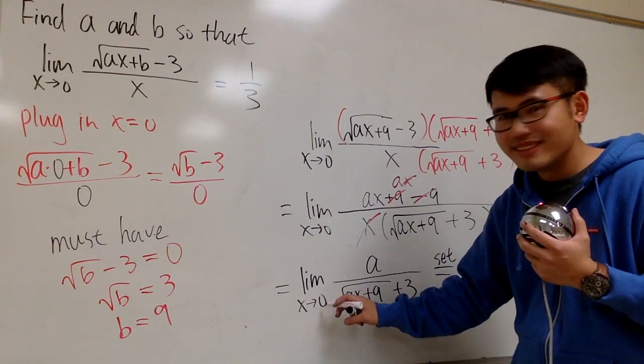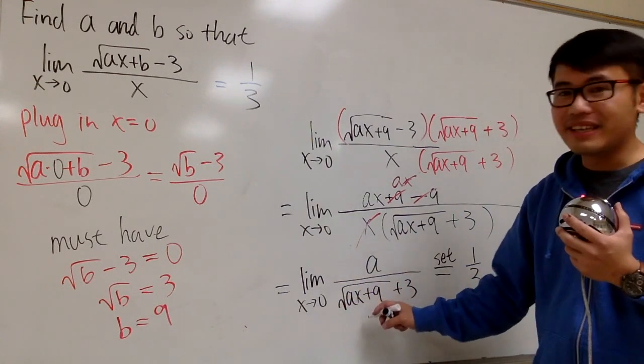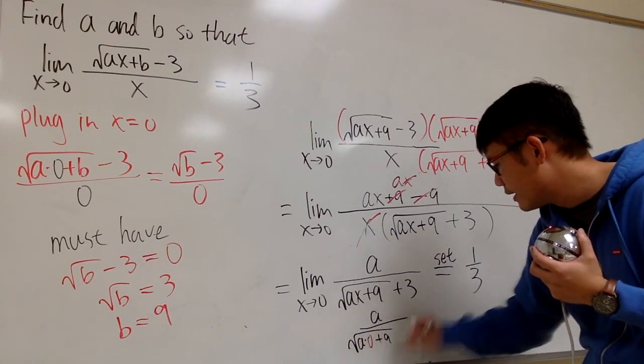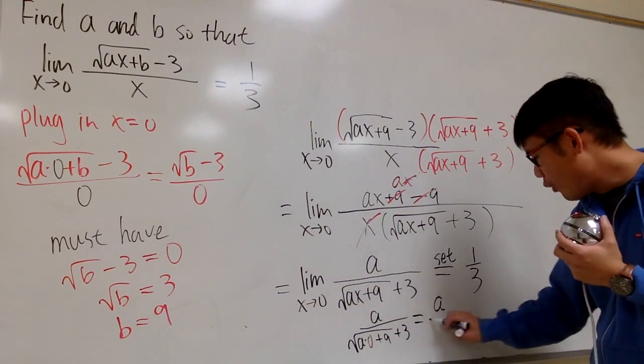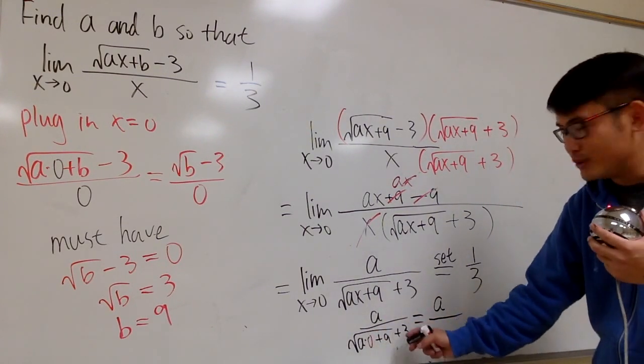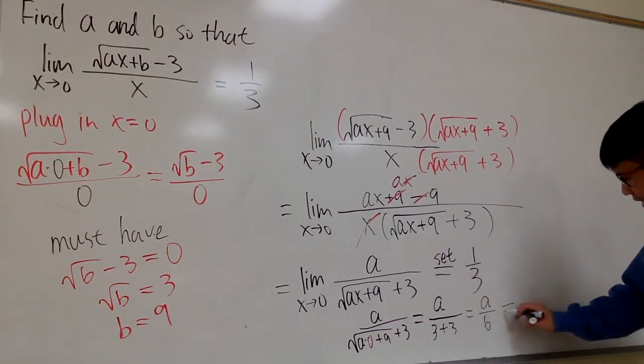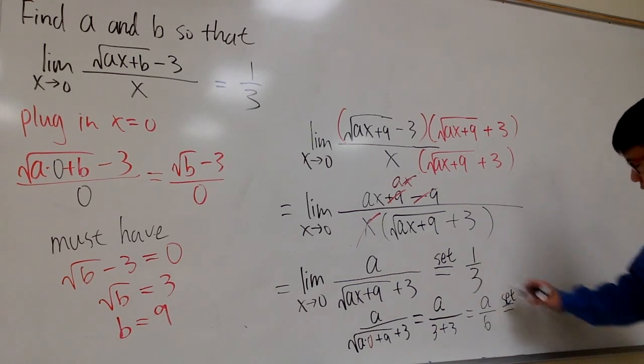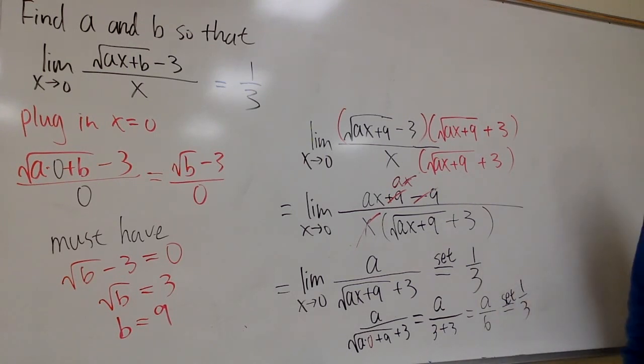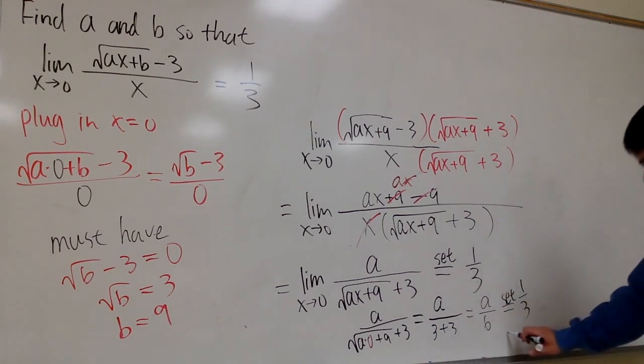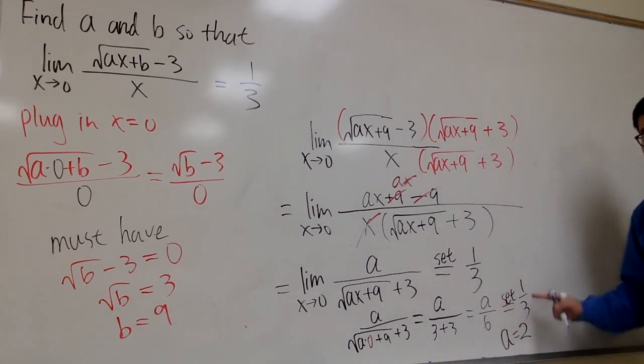Let's plug in 0 into this x again. And once again, we have to set this equals to 1 third. And, of course, you do whatever you want to do right here, and you end up with a equals 2. 2 over 6 is 1 third.